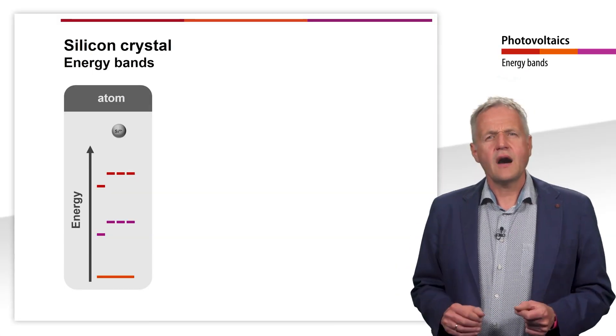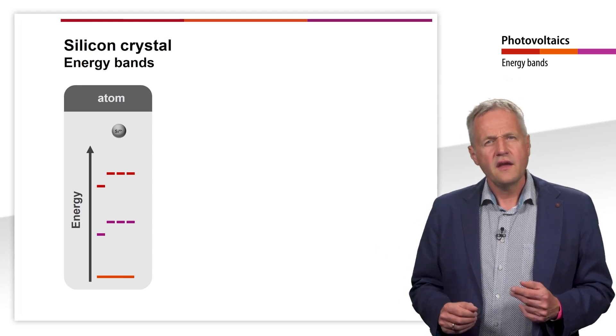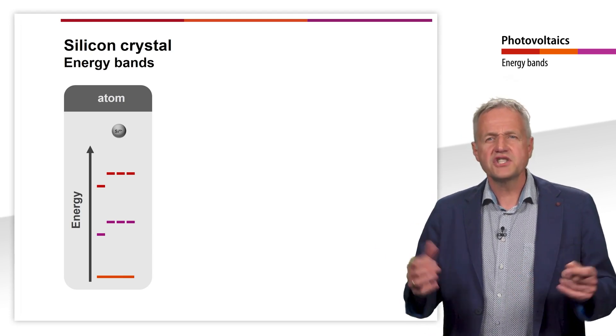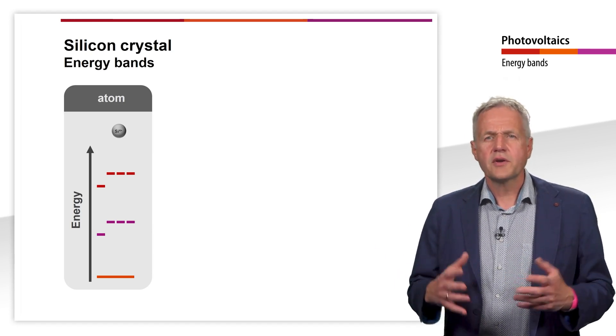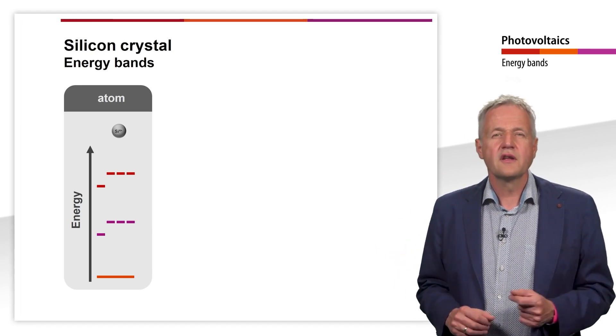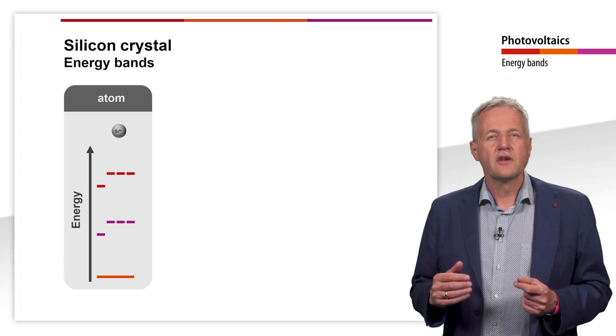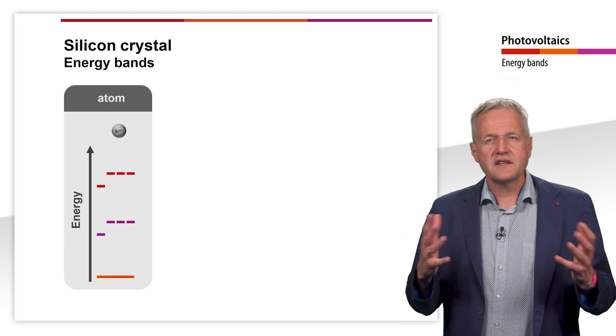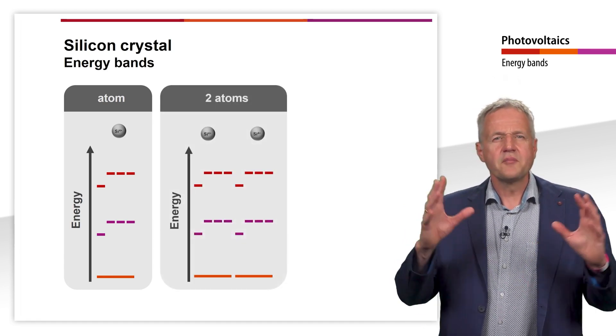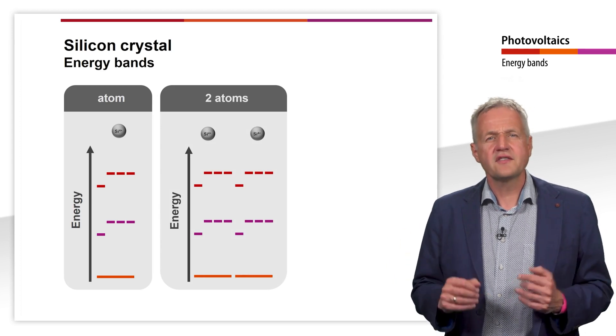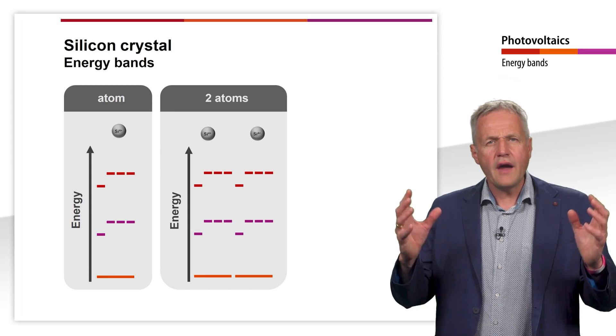Let us look at how the electron energies behave in a silicon crystal. Here you can see again the energy levels in a single silicon atom. Because of the Pauli principle, there can only be two electrons in each orbital. We now consider the energy states of two silicon atoms. At some distance from each other, both have the same orbitals with identical occupation.